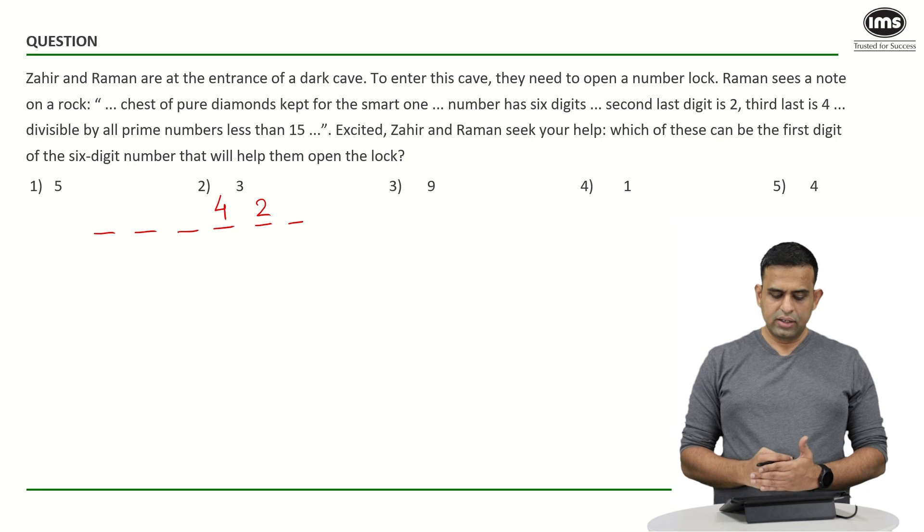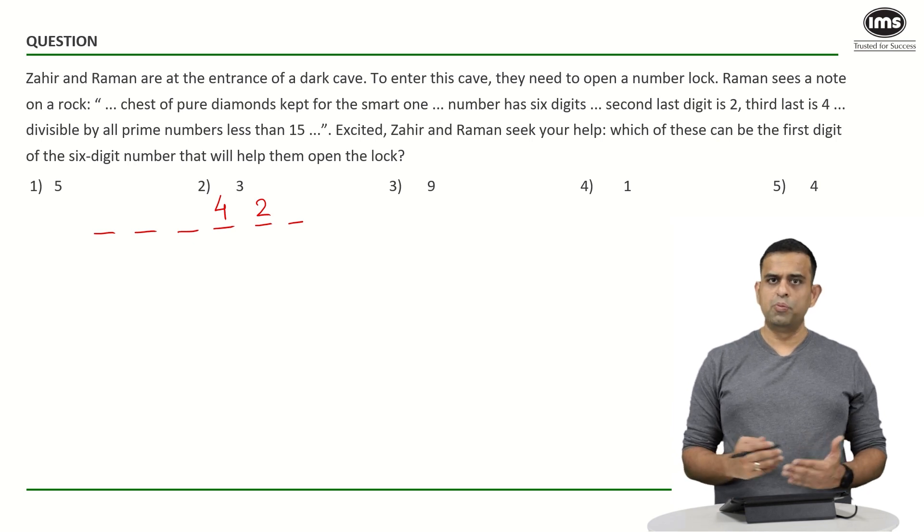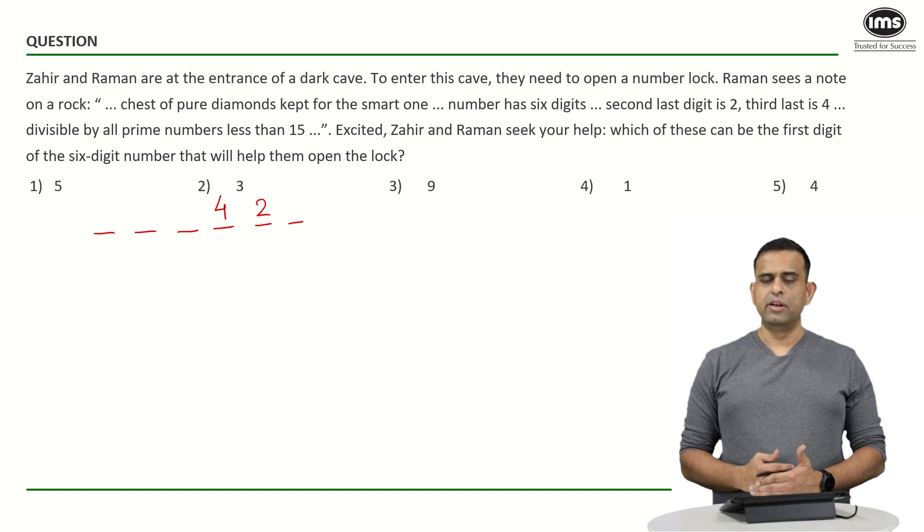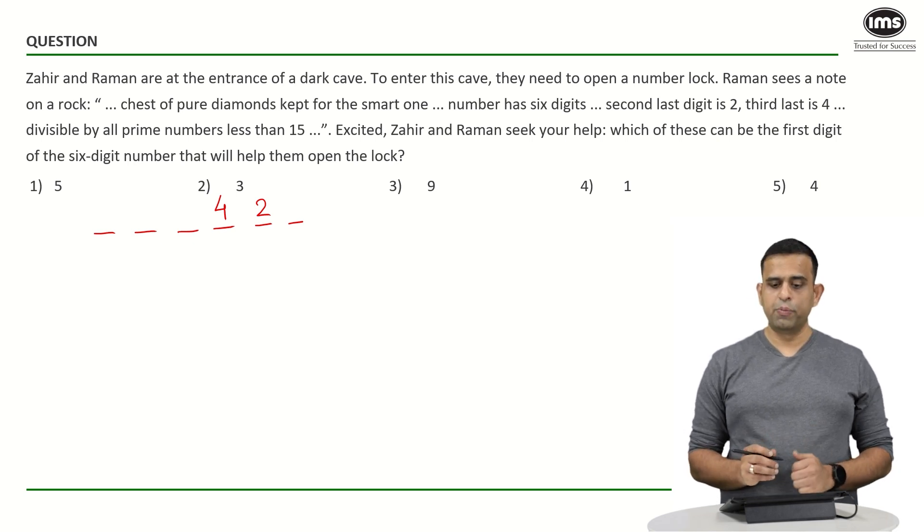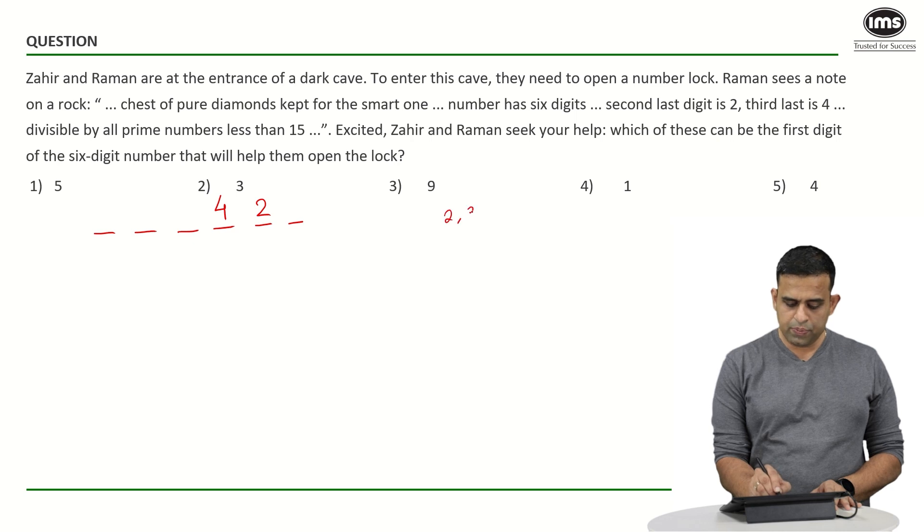And they have given that it is divisible. The entire code is divisible by all the prime numbers less than 15. What does it mean? This code is divisible by the number 2, 3, 5, 7, 11 and 13.